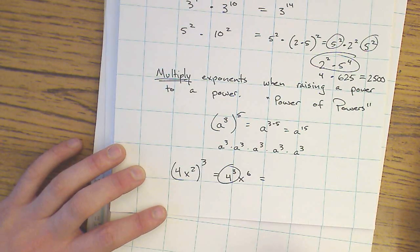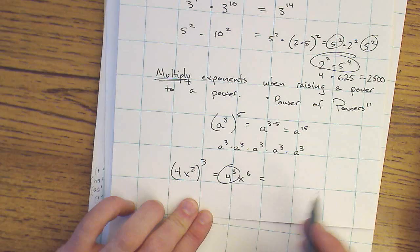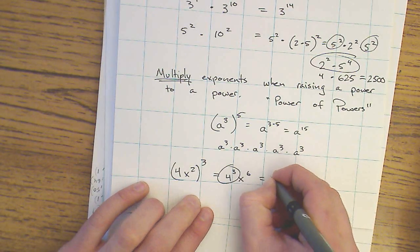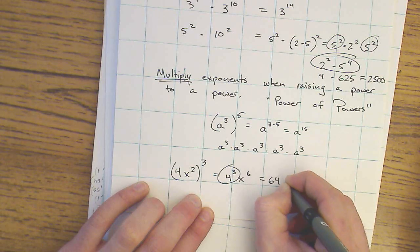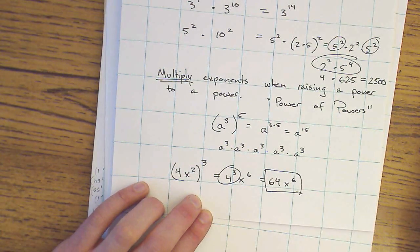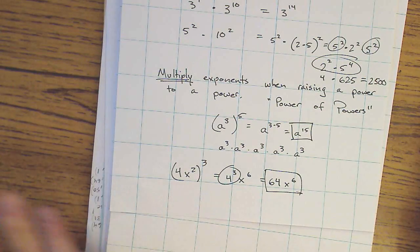I should simplify this because I can find a value for it numerically. 4 times 4 is 16, times 4 is 64. 64x to the 6th. And this is my answer from the last problem.